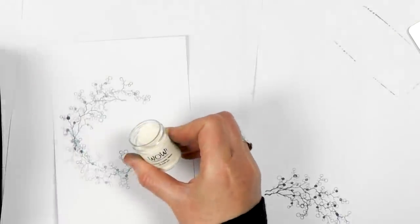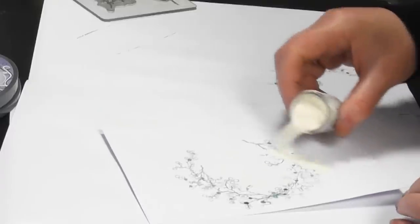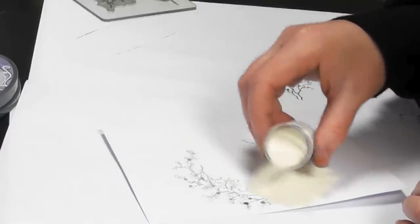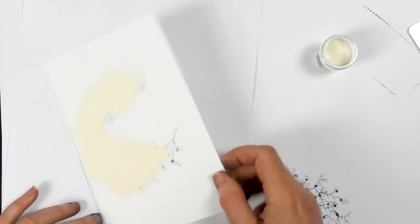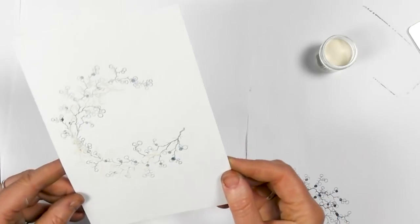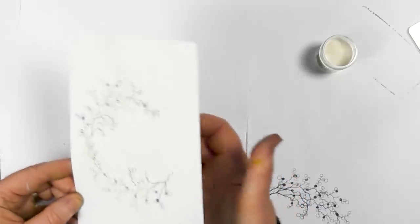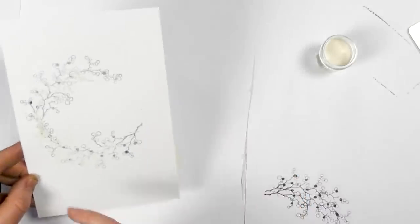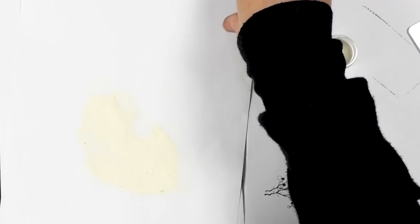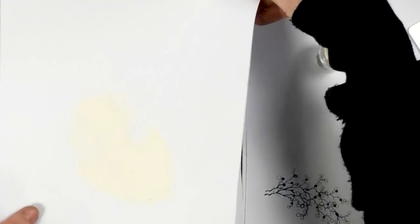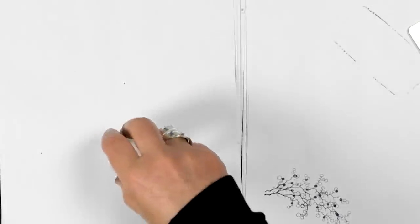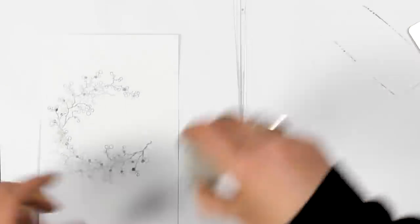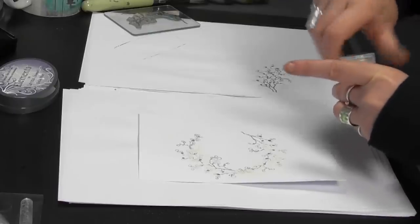So we've got our opaque vanilla white. So I'm going to sprinkle that over the top, tap that off and hopefully it's just stuck to where I've stamped with the Versamark. So let's heat this up.